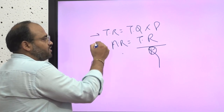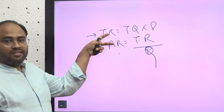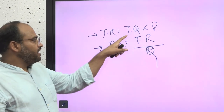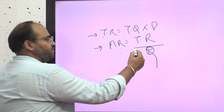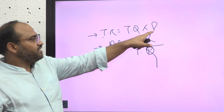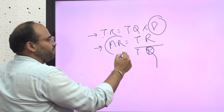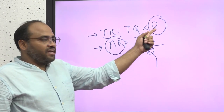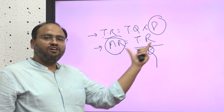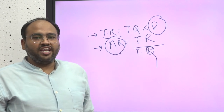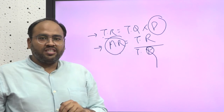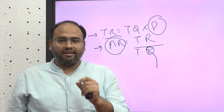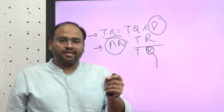A question arises: these two phenomena seem similar to one another. In total revenue, there is total quantity and price; in average revenue, there is total revenue and total quantity. But here it is price and here it is average revenue. So the question is: are average revenue and price the same phenomenon or different things? There are two types of situations — perfect competitive market and imperfect competitive market.